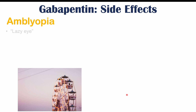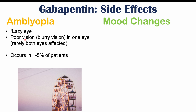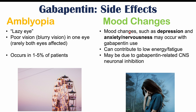Amblyopia, or lazy eye — essentially poor or blurry vision in one eye, rarely both — may be temporary or may cause ongoing issues, occurring in 1 to 5% of patients. Mood changes such as depression, anxiety, or nervousness may also occur with gabapentin use. This can contribute to low energy and fatigue, and may be due to gabapentin-related CNS neuronal inhibition, affecting an estimated 1 to 5% of users.